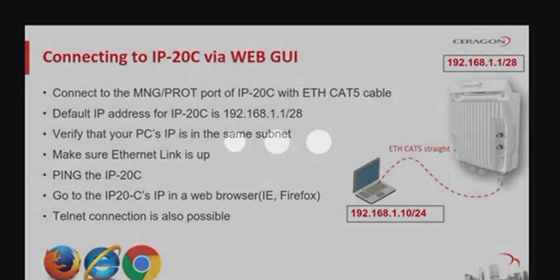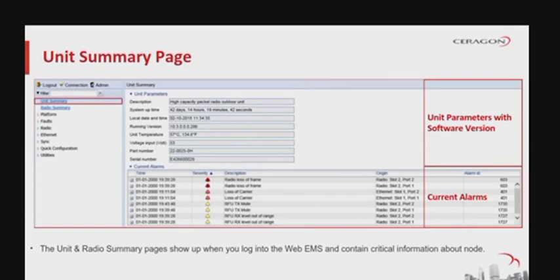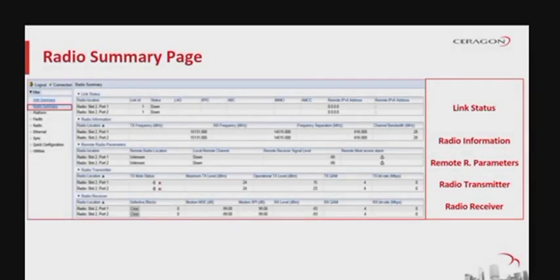The first page after a correct login includes two sides: a unit summary and a radio summary page with all first-hand relevant information for the node. The unit summary page shows descriptive information including operational time, operating system version, unit temperature, and unique serial number, as well as a list of current alarms and the outdoor unit's inventory. The radio summary page gathers key link and radio parameters on a single page for quick viewing. To display it, select Radio Summary from the web EMS main menu.